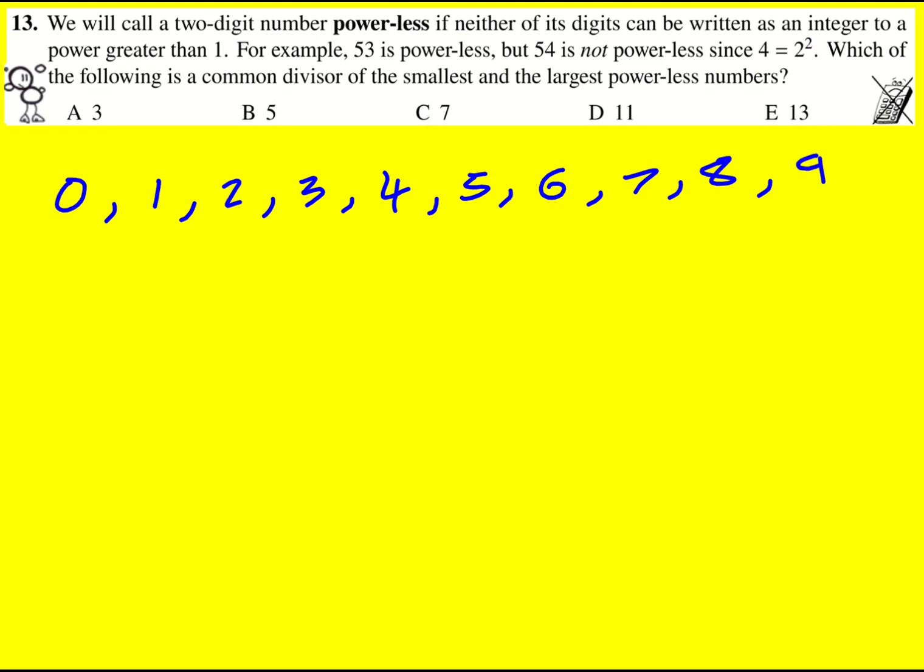So powerless numbers will not involve any digits with four in because that is two squared. Eight is two cubed. Nine is three squared. So they're all out.